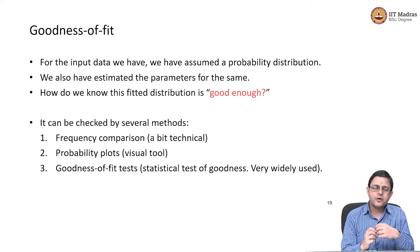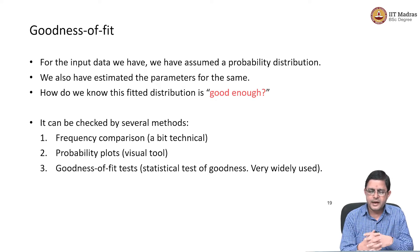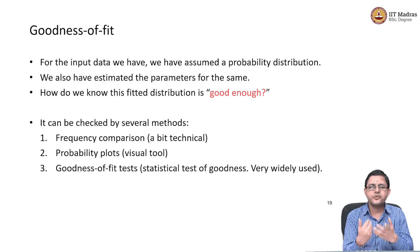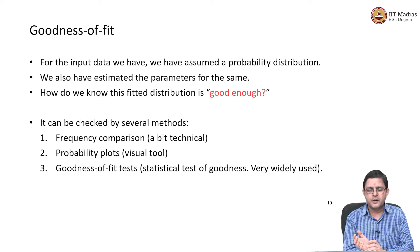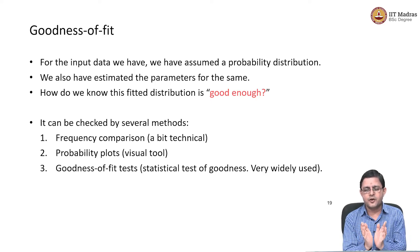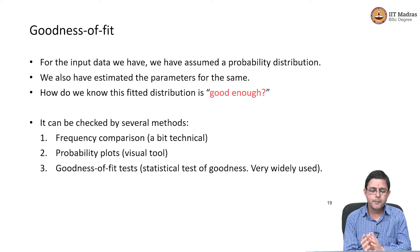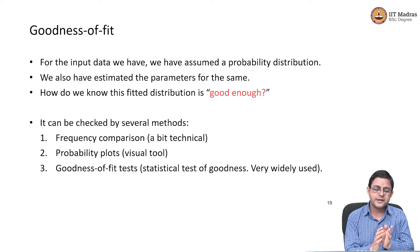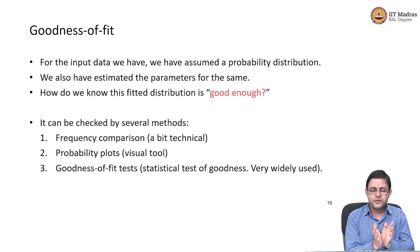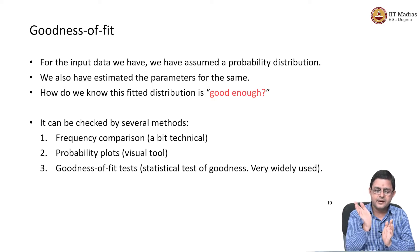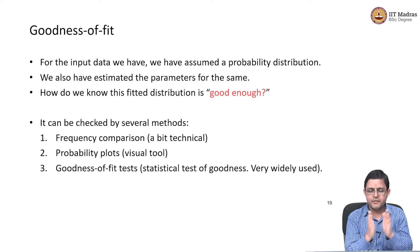You may use what are called probability plots, and I have a couple of examples in the subsequent slides. Those are essentially visual tools. They tell you whether the observed probability, observed percentile, or observed quartile matches the quartiles and percentiles that may come from the distribution. If it fits, you will get a nice line. If it does not fit, you will be far away from that line.